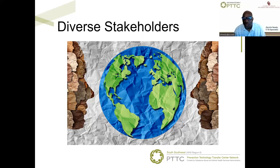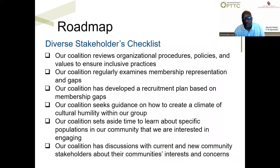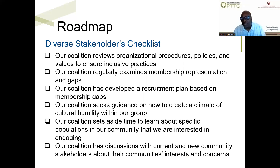So how do we build stronger coalitions with diverse stakeholders? In the toolkit, a roadmap. The diverse stakeholders checklist is the roadmap that many of you have been needing to show your coalitions the path. When you have a roadmap, it's much easier to reach your destination. Even for people who have worked in prevention for many years, a tool like this is extremely helpful.